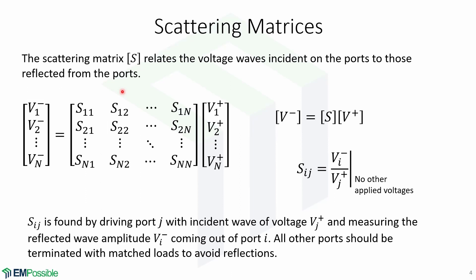We have already discussed how difficult it is to define voltages and currents in microwave devices. Thus, dealing with voltage and current matrices in microwave networks is not very useful. The scattering matrix is a more practical approach to describing microwave networks, as they are correlated directly with measurements done in laboratories and with the ideas of incident, reflected, and transmitted waves. The scattering matrix relates the voltage waves incident on the ports to those reflected to the ports, and is described by this matrix, where the reflected voltages are equal to the scattering matrix times the incident voltages.